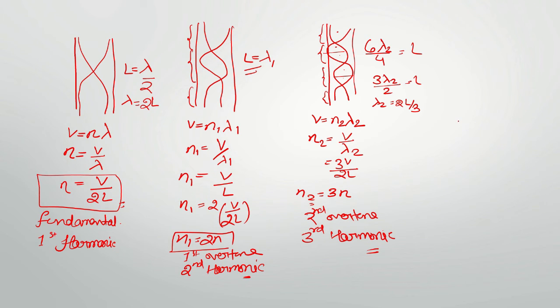Now, we have formula for fundamental frequency and these overtones. We have first harmonic, second harmonic, and third harmonic. It means that even and odd, both harmonics are present.